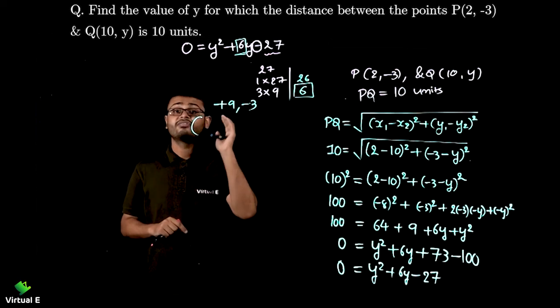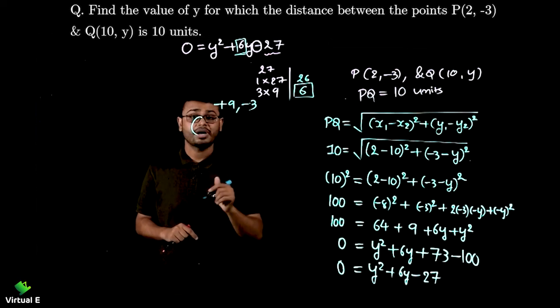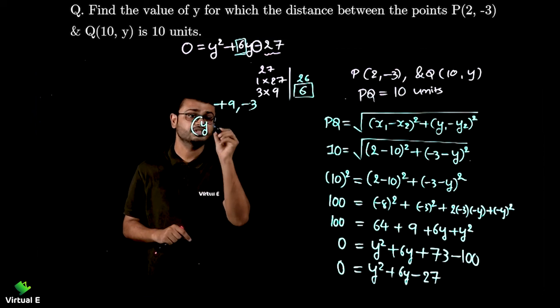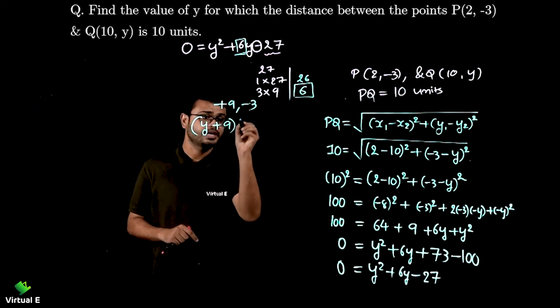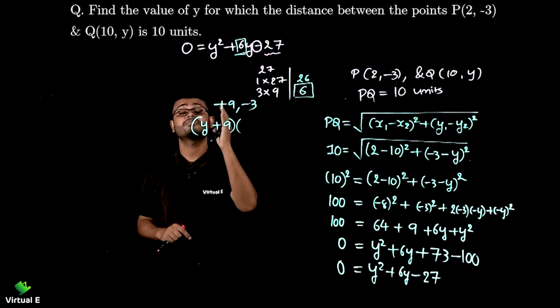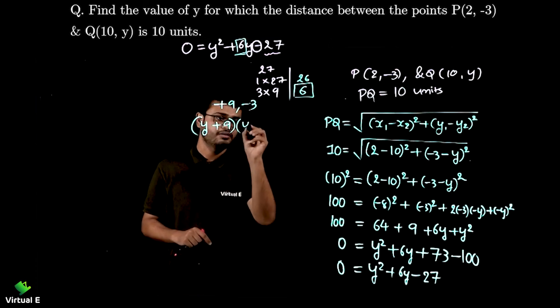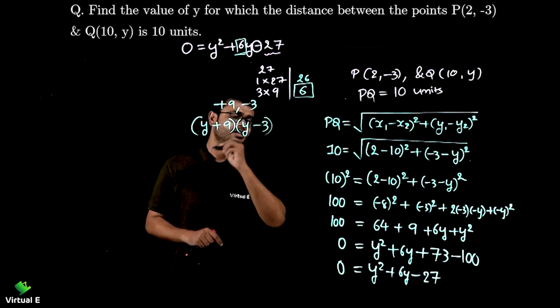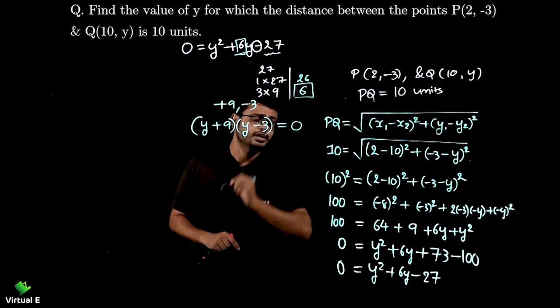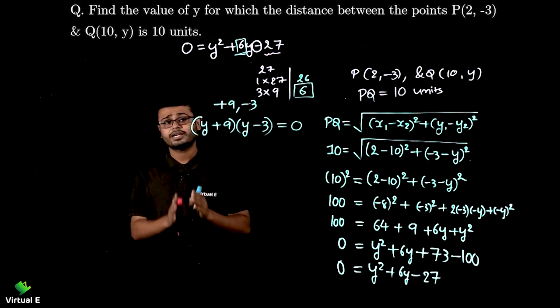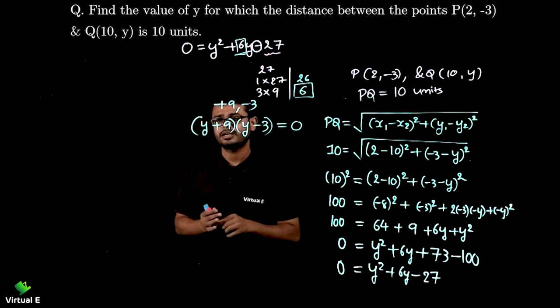So factors I will be writing first term as it is without power. So y and my first factor +9. Then I am writing first term without power again which is y and -3 is equal to 0. Done. Now I need to take each factor 0 one by one. Let's start.